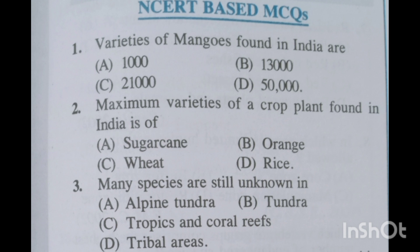Question number three: many species are still unknown in — option A: alpine tundra, option B: tundra, option C: tropics and coral reefs, option D: tribal areas. For this question, option C will be correct: tropics and coral reefs.